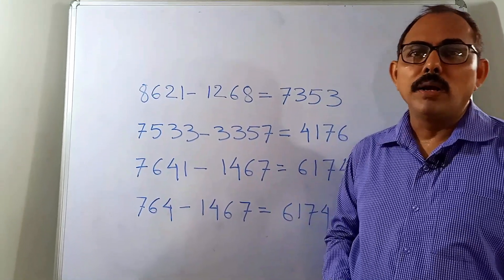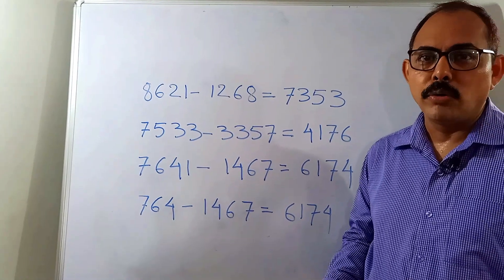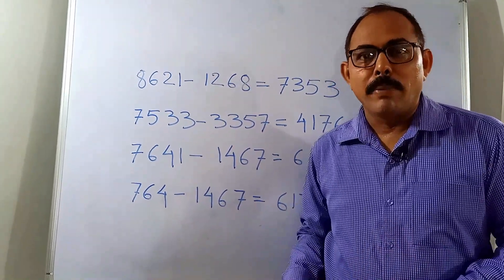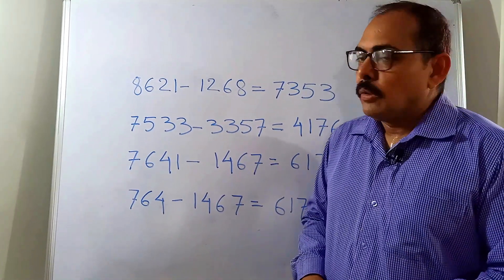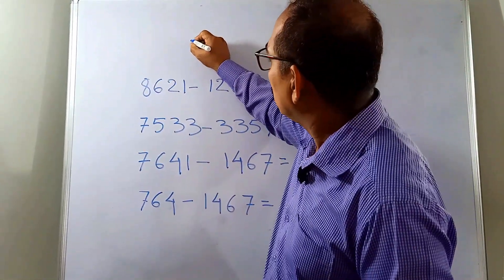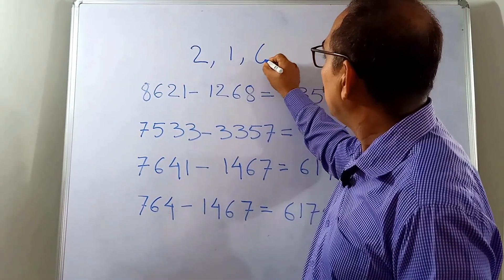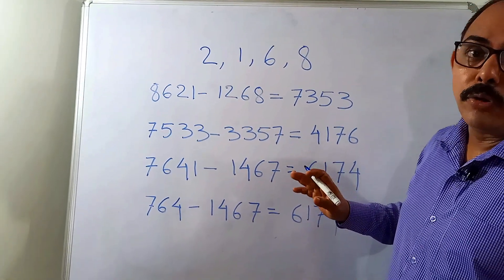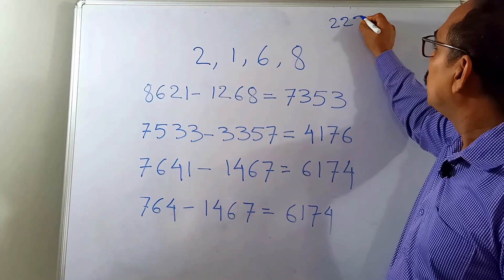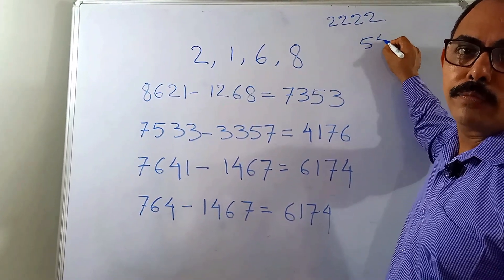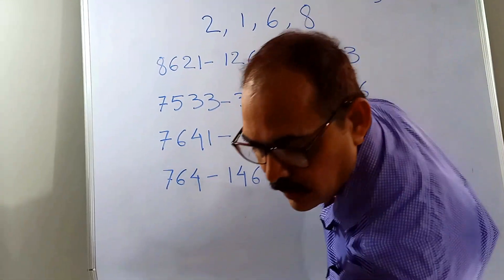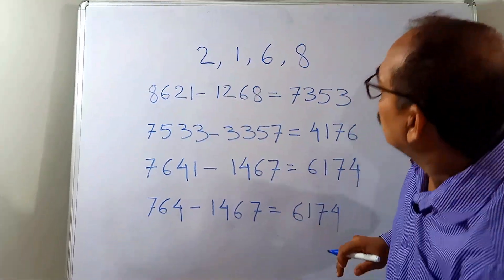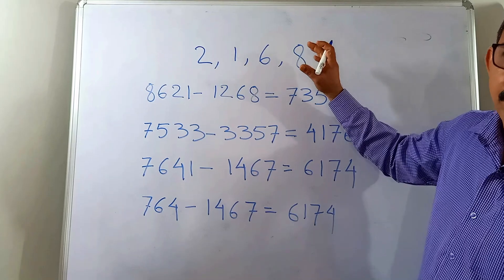So let's start. In our last episode I told that we'll be discussing about one mathematician — much unknown — but he has done wonders with numbers. Before telling about him, we'll do one operation that he discovered. Let us take any four-digit number — say 2, 1, 6, 8 — but keep one thing in mind: the digits should not all be the same, like 2222 or 5555.